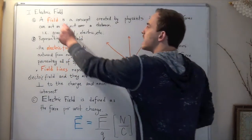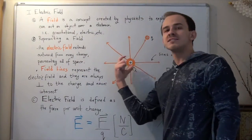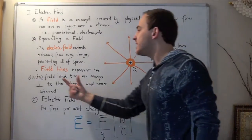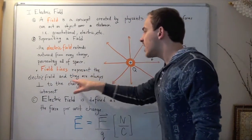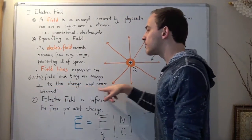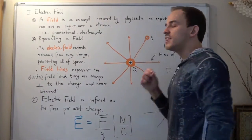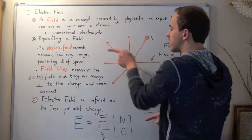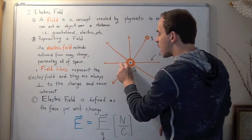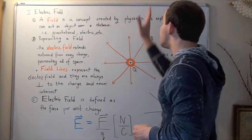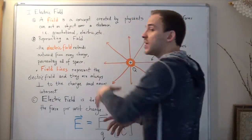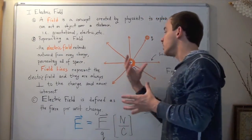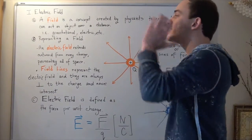A positive charge creates something called field lines, also known as lines of force. These field lines represent the electric field — they are always perpendicular to the charge and they never intersect. This positive charge will create field lines that extend radially outward in all directions, always perpendicular to the surface of the charge. These lines extend forever, making the field an infinitely large plane — an infinitely large XY plane, or XYZ plane if we're looking at a sphere.